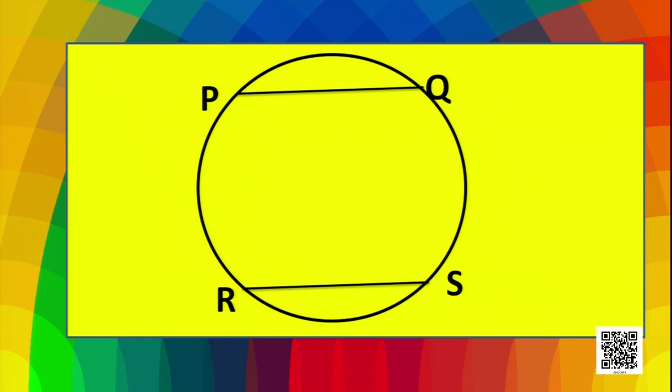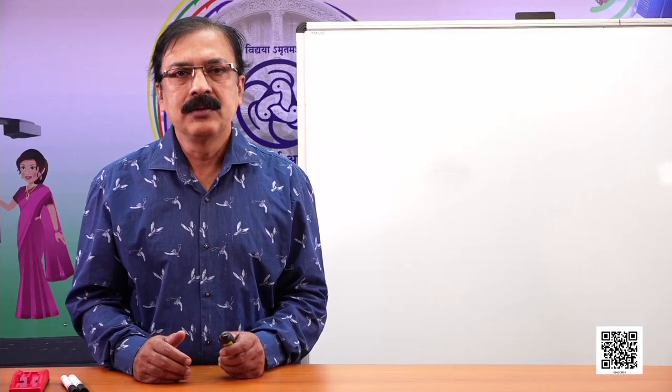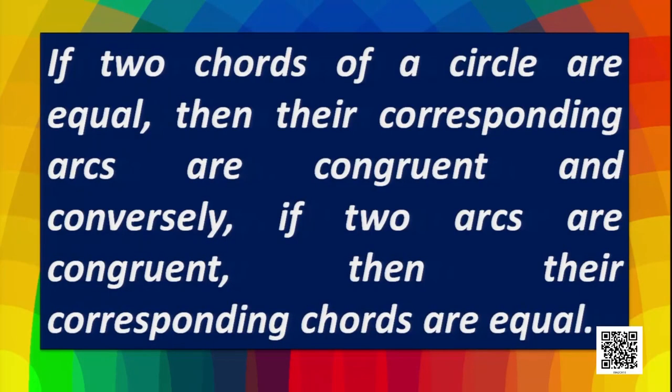What do you mean by that? Is only their length equal? No. In this case, they are congruent. So, if two chords of a circle are equal, then their corresponding arcs are congruent. And conversely, if two arcs are congruent, then their corresponding chords are also equal.